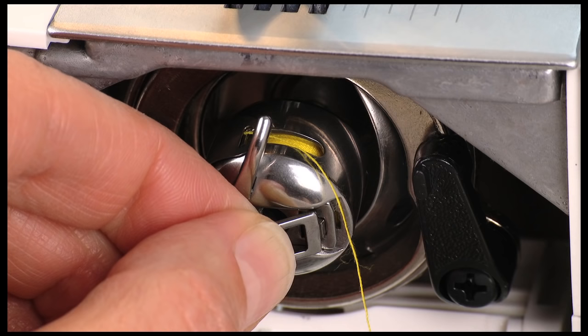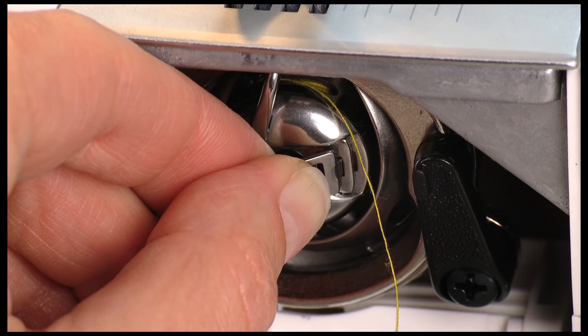Hold the bobbin case by the hinged latch. Insert it into the shuttle. You should feel it click into place. Once the bobbin case is correctly seated, release the latch.